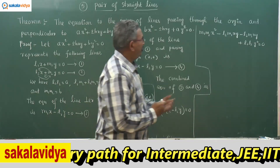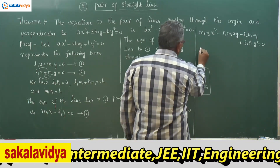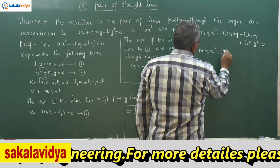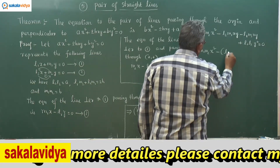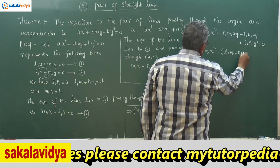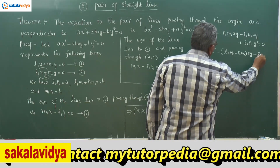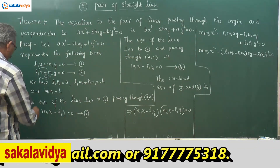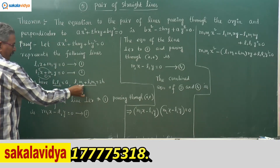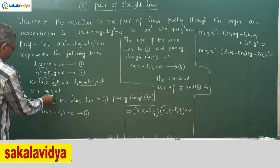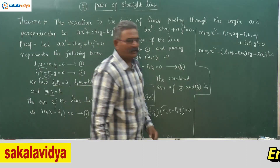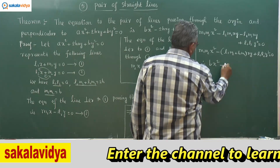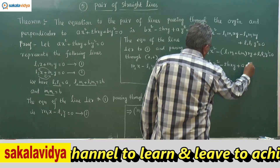Now substituting the respective values: l₁l₂ = a, l₁m₂ + l₂m₁ = 2h, and m₁m₂ = b. Therefore, the combined equation becomes bx² - 2hxy + ay² = 0.